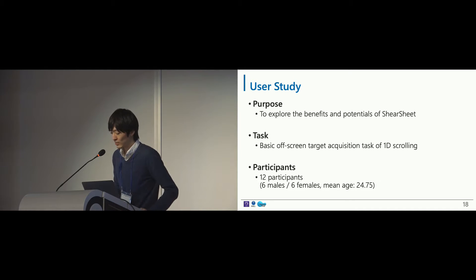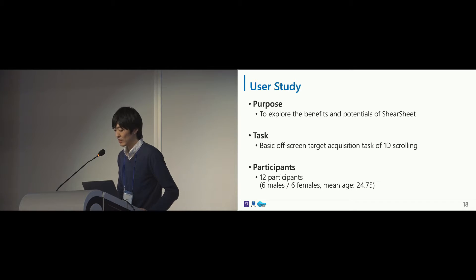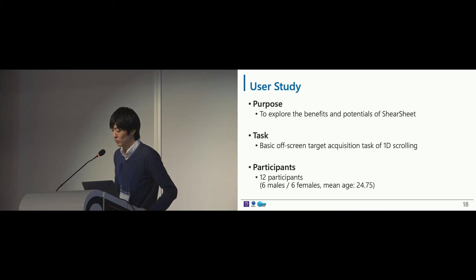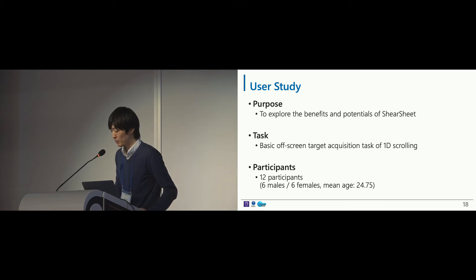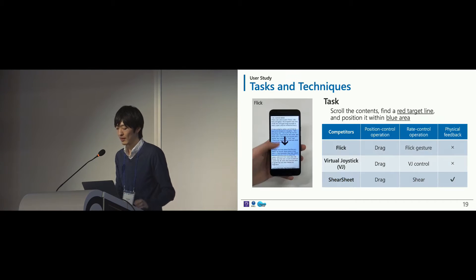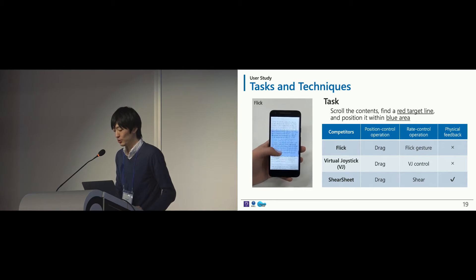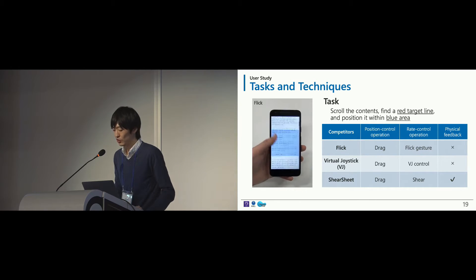We conducted a user study to explore the benefits and potentials of Shear Seat. In this study, we focused on investigating the performance of a basic off-screen target acquisition of one-dimensional scroll, as one of the most promising interactions using Shear Seat. 12 participants took part in this experiment. The task required participants to scroll through a text-based document, and to complete a trial, participants had to scroll the content, find a red target line, and position it within the blue area.